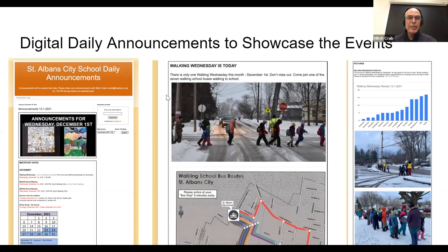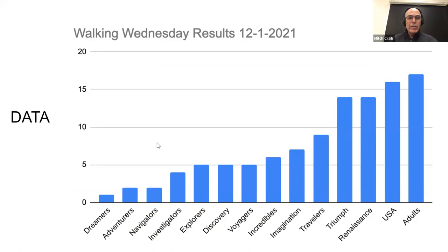As soon as an event is over, the next day we show the results — how many people walked, which groups walked — along with lots of pictures. Our school is divided into learning communities of about three classrooms and 60 to 75 kids each. When kids come in, they tell which community they're from, it gets checked off, and this is put into a graph so they can see how they're competing against other groups. We like to recognize the top performers.